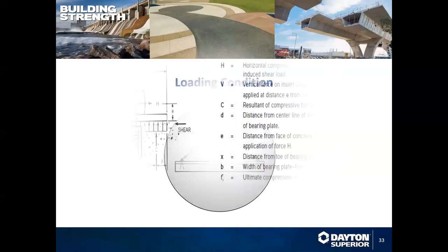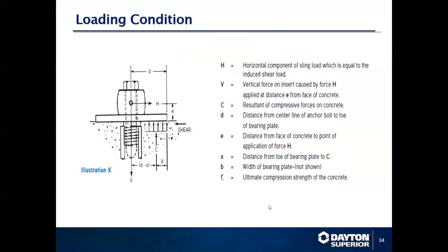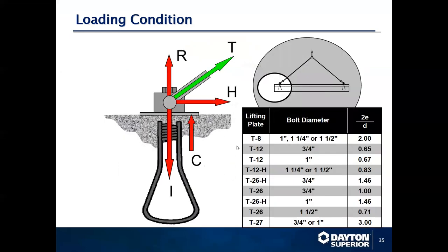Loading conditions typically take place in a vertical position, which is 100% tension. Load ratings are taken at the R dimension — total tension; the H dimension — shear; and the T dimension, which is typically a 30- or 40-degree angle, representing a true lifting condition with combined shear and tension loads.